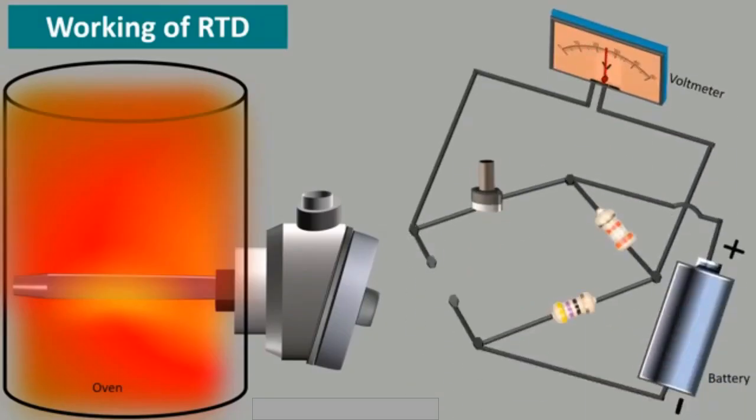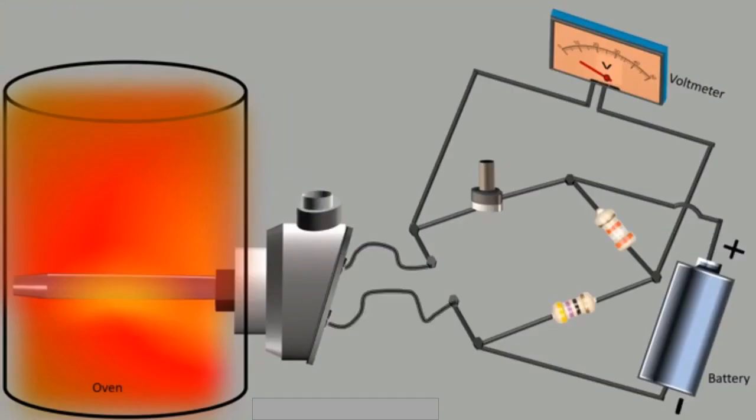This property allows them to be used for precise temperature measurement and control in electronic circuits. Thermistors are made from semiconductor materials such as metal oxides. When the temperature of the semiconductor changes, the number of available charge carriers or electrons in the material also changes. It is often used for temperature sensing and protection in circuits.